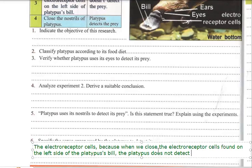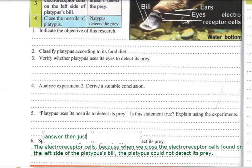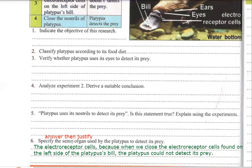To justify: the electroreceptor cells, because when we close the electroreceptor cells found on the left side of the platypus bill, the platypus was unable to detect its prey. When specifying, always give the answer first and then justify your answer.